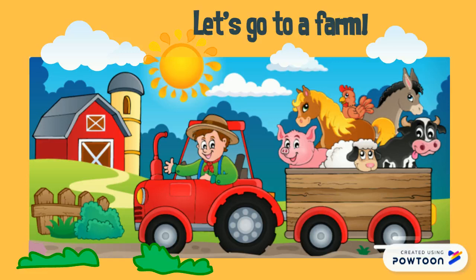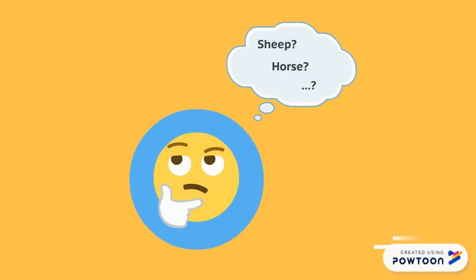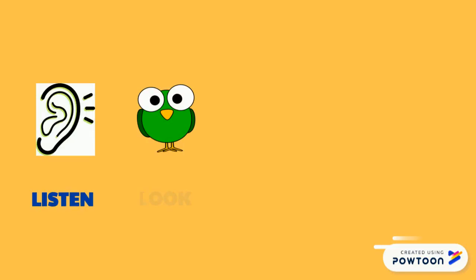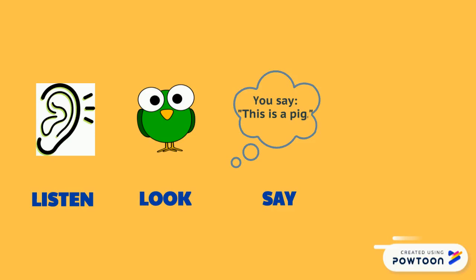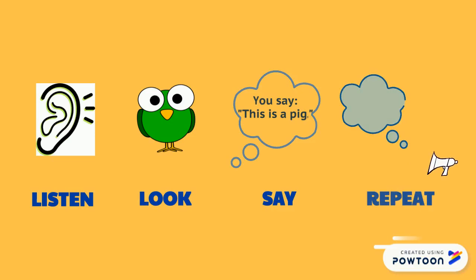Okay, in the farm, let's play a game. You have to guess the name of the animal. First, listen to the sound of the animal, then look at the picture, then say the name of the animal, and then say, this is a... For example, pig. This is a pig. Then listen to the correct pronunciation and repeat the sentence.